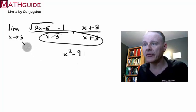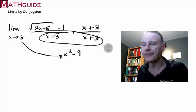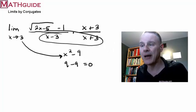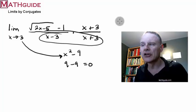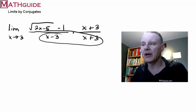And then if I were to plug this value in, I'm going to get 3 squared minus 9, right? That's 9 minus 9. And I'm going to get a 0 in the denominator anyway. So when I multiply by the conjugate of the denominator, it doesn't work.